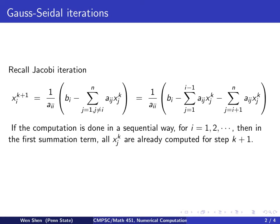We now make the following observation. If now my computation is done in a sequential way, that is, I go through i equals to 1, 2, 3, all the way to n, then in the first summation term,